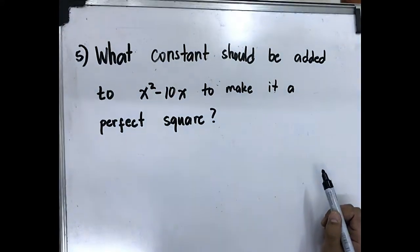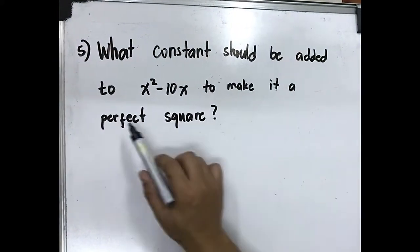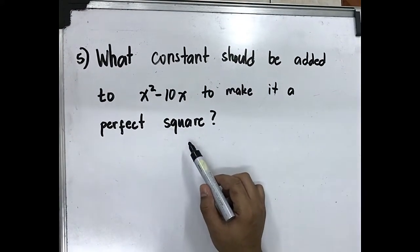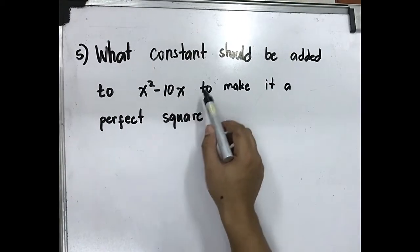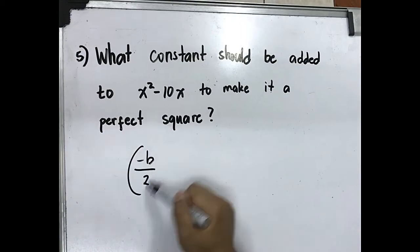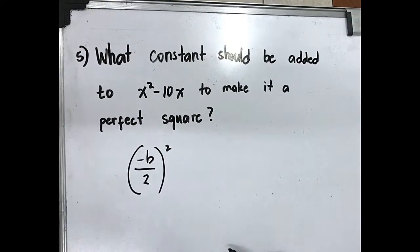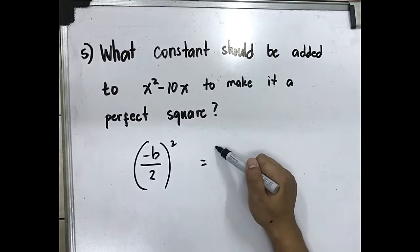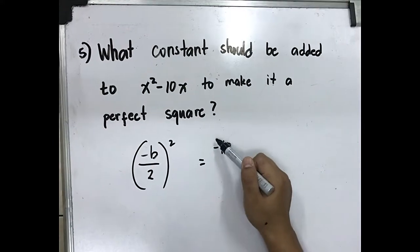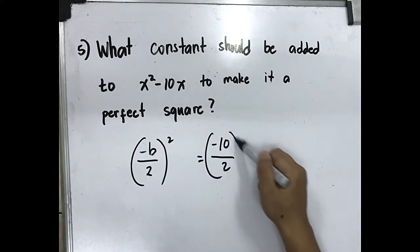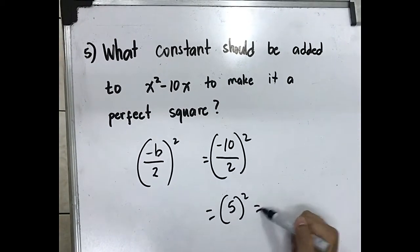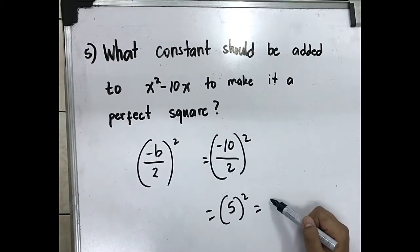Question number 5: What constant should be added to x squared minus 10x to make it a perfect square trinomial? The formula to get the constant term is: take negative b divided by 2, then square it. Substitute: negative 10 divided by 2 is 5, squared gives 25.